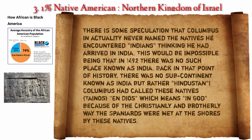There is some speculation that Columbus never actually named the natives 'Indians' thinking he had arrived in India — this would be impossible, being that in 1492 there was no such place known as India and no subcontinent known by that name, but rather Hindustan. Columbus had called these natives 'Tainos' and 'Dios,' meaning 'and God,' because of the Christian and brotherly way the Spaniards were met at the shores by these natives.